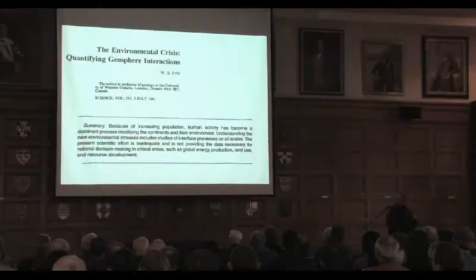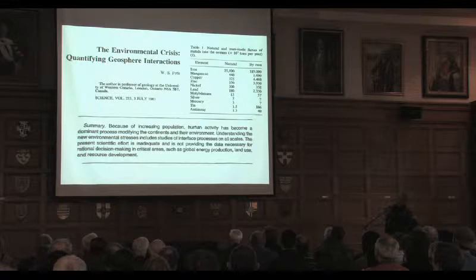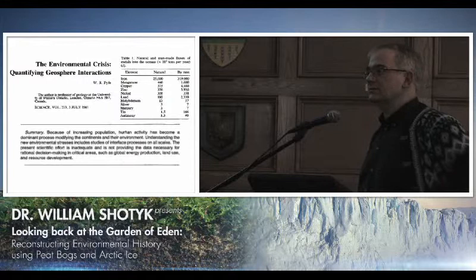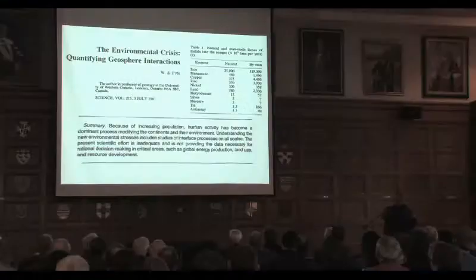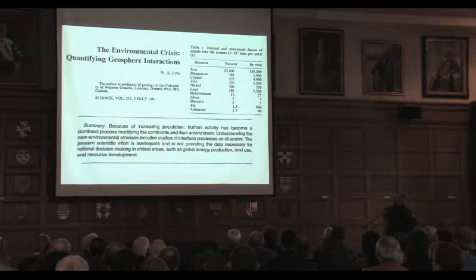1981 is when I came to the University of Western Ontario. The paper is titled 'Environmental Crisis: Quantifying Geosphere Interactions.' It was a profound paper in which Bill Fyfe explained that human activities are affecting environmental processes on a global scale. He included a table of the total mobilization of metals from the continents into the oceans, arguing that human activities are on the same scale as geological processes. I've been thinking about this paper ever since, and have drawn a lot of inspiration from it.